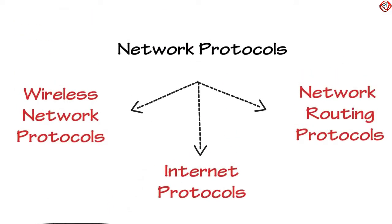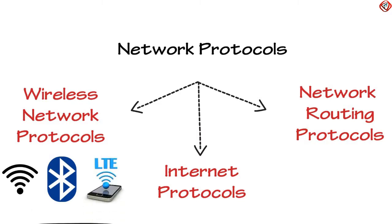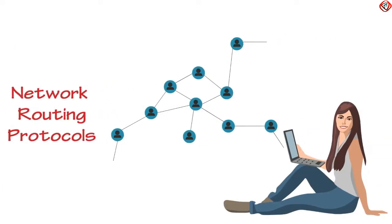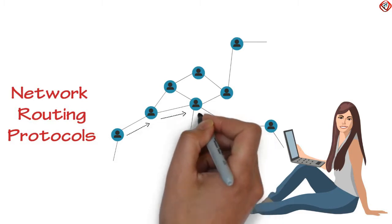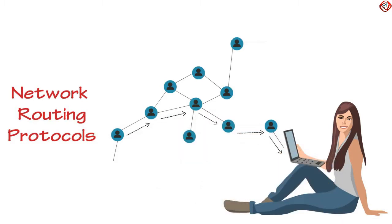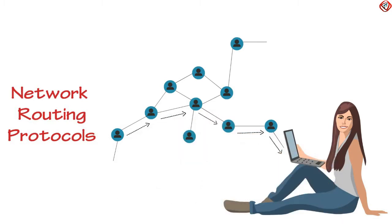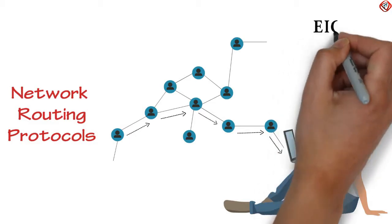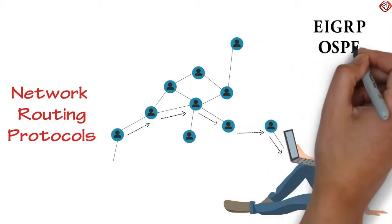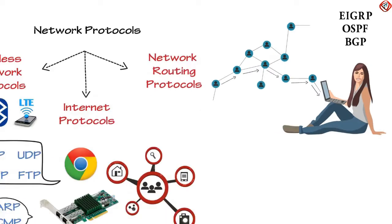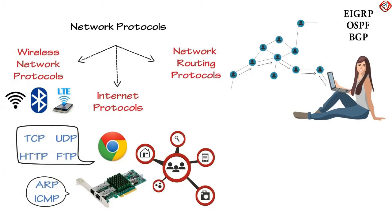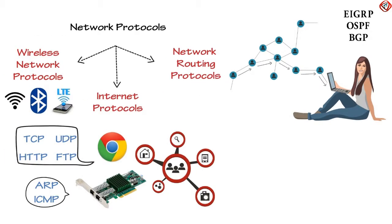Wireless Network Protocols are needed for proper functioning of Wi-Fi, Bluetooth, and LTE. Network Routing Protocols are needed for deciding the best download path for a device to download a file from the Internet, and include EIGRP, OSPF, and BGP. We are going to discuss these in detail in later videos.